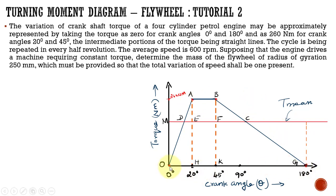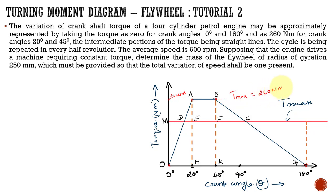We started with just four points: at 0° and 180° representing zero torque, and points A and B representing 260 Newton meters at 20° and 45° respectively. We connected these with straight lines to construct the turning moment diagram. We have also roughly drawn the T_mean line just for indication — while solving the problem we will find the exact value of T_mean. The T_max provided is 260 Newton meters.